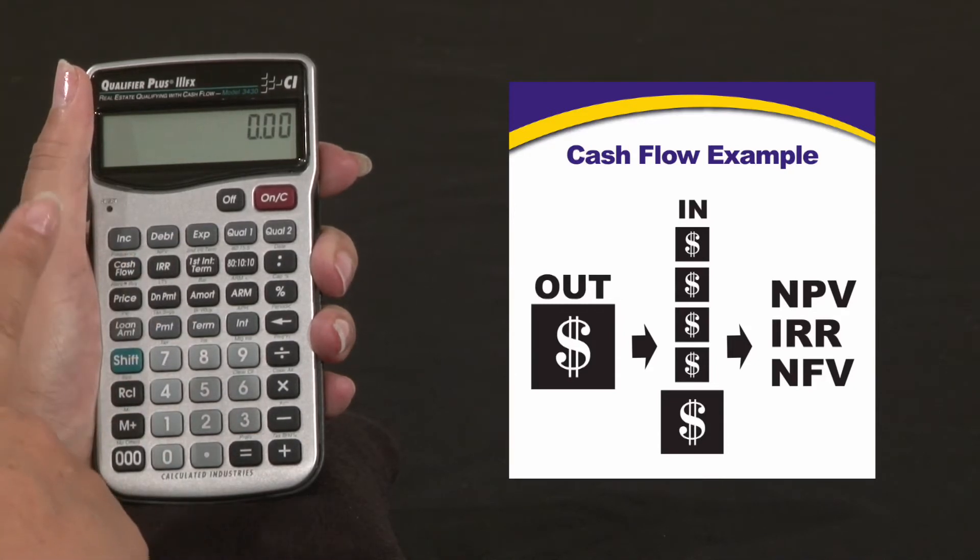Say your customer wants to buy a piece of property for $225,000. He'd like a 10% return on his money in 3 years and he'd like to get $275,000.